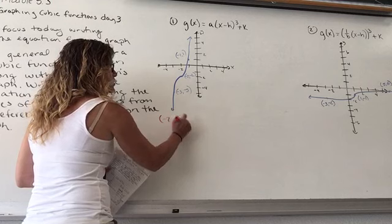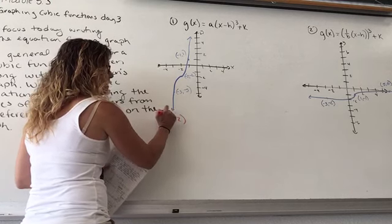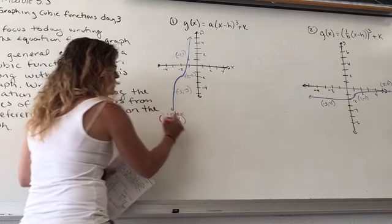So negative 2, negative 2. This is our vertex. That means that's H and that's K.